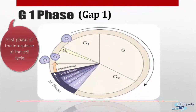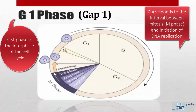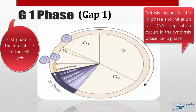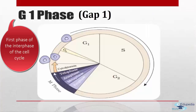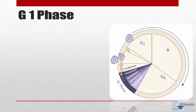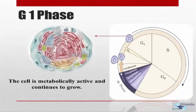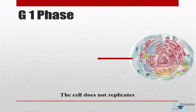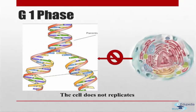The G1 phase is the first phase of the interphase of the cell cycle. It corresponds to the interval between mitosis and initiation of DNA replication. Mitosis occurs in the M phase and DNA replication occurs in the S phase — the synthesis phase — so G1 is the interval between the M phase and the S phase. During the G1 phase, the cell is metabolically active and continuously grows, but the cell does not replicate its DNA.